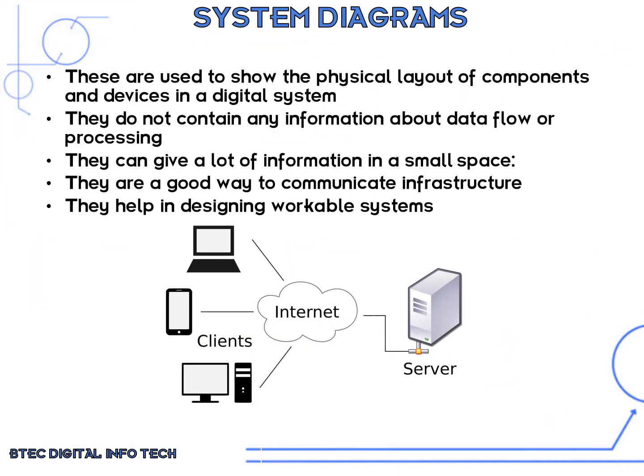A system diagram is used to show the physical layout of components and devices in a digital system. It doesn't contain any information about data flow or processing. System diagrams can give a lot of information in a small space and are a good way to communicate infrastructure. They help in designing workable systems. In this case we are looking at a client-server setup.